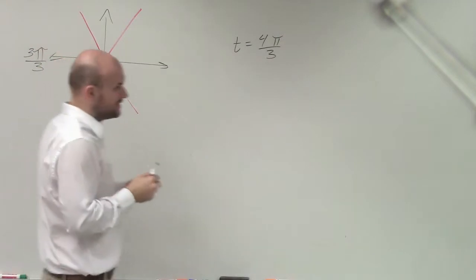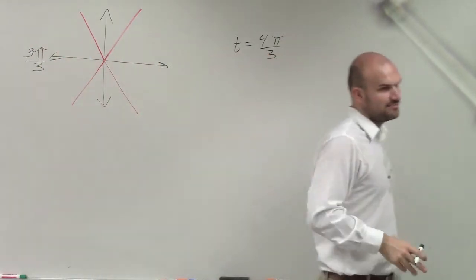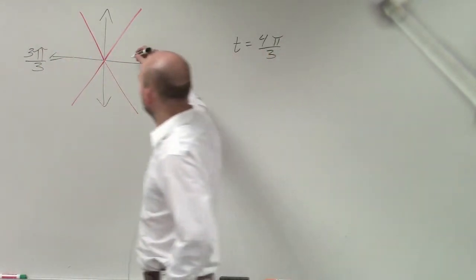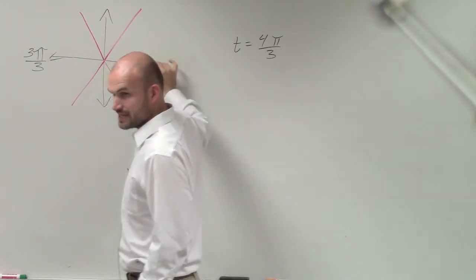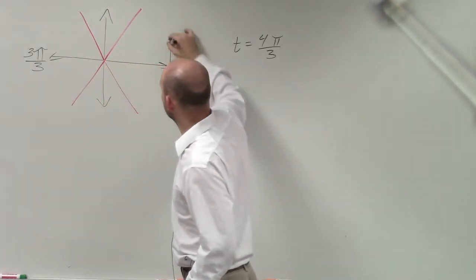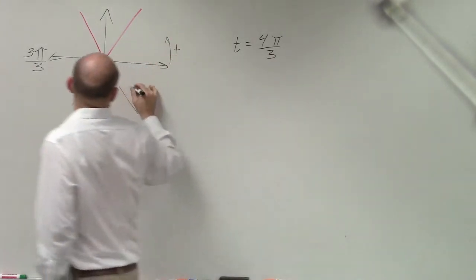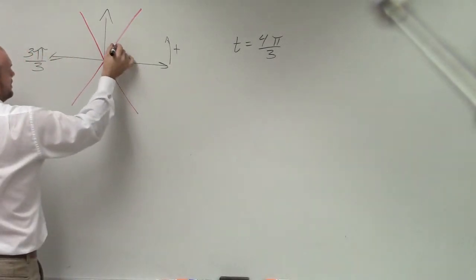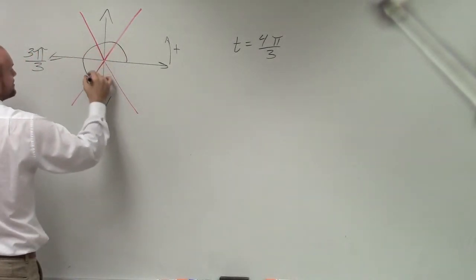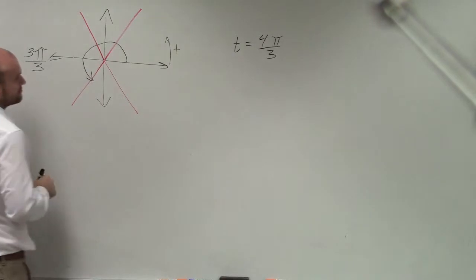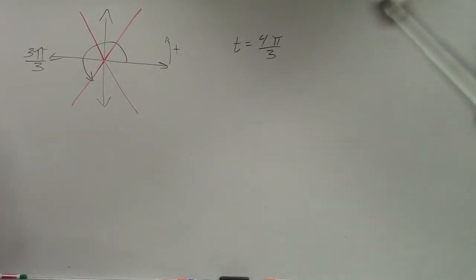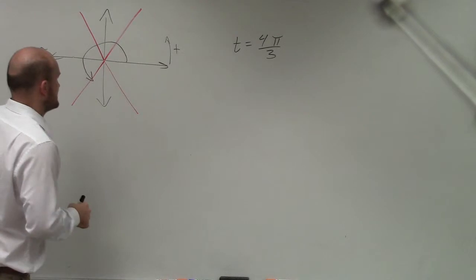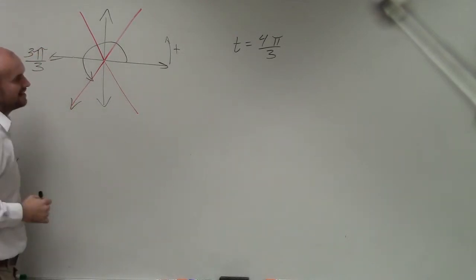Now I need to determine where is this point. Starting at my initial side in standard form, going in the positive direction, I have 1 third, 2 thirds, 3 thirds, 4 thirds. So that's my angle, and that's my terminal side.